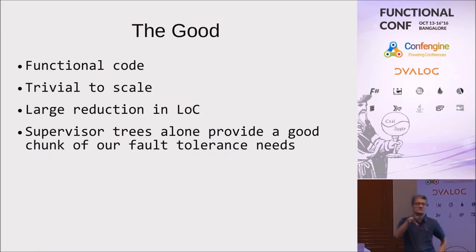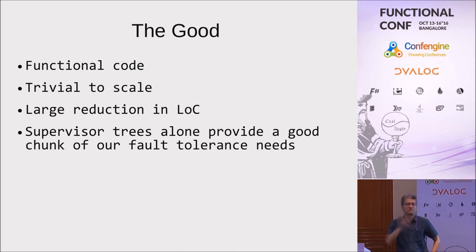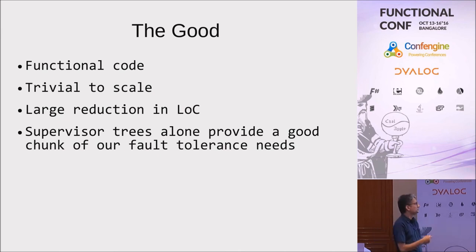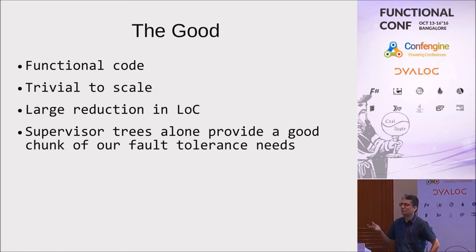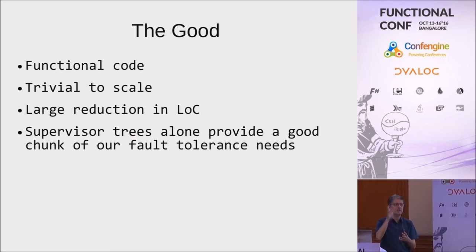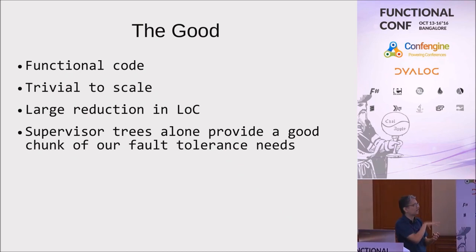The good part so far is that the code is very functional in spite of me writing it. It's very trivial to scale — getting a node up on the same machine or a different machine is pretty easy. Compared to Java, there is a significant reduction in lines of code, which I like. And out of the box, merely using supervisor trees gives me a degree of redundancy which is very hard to pull off in Java — threads, thread pools, executors — let's not even go there. I can worry about the problem rather than all the peripheral aspects. I have a tested solution, 20 to 40 years old, which gives all this out of the box.